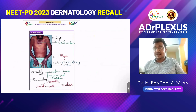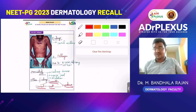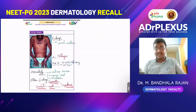We know the features of niacin deficiency: dermatitis, dementia, diarrhea, and the fourth D is death. Apart from that, in the dermatitis part, on the skin you can see the Casal's necklace and a photodistributed rash.